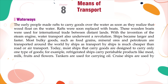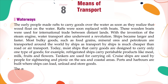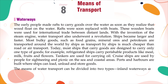Cruise ships are used by people for sightseeing and picnics on the sea and coastal areas. Boats and harbors are built where ships can load, unload, and store goods. The means of water transport can be divided into two types: inland waterways and sea routes.